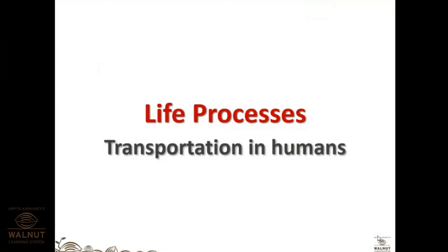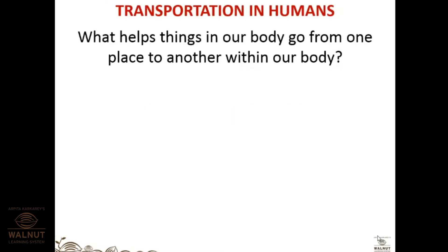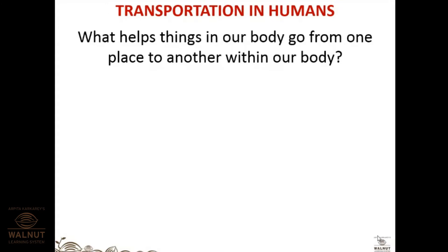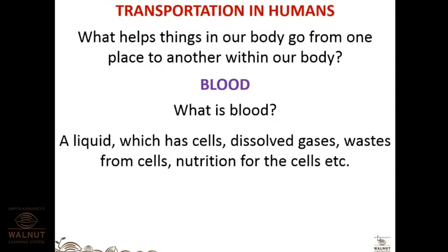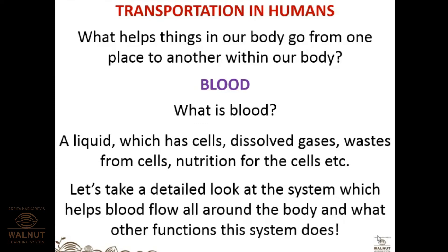Today we start with transportation in humans — how humans perform transportation and which part of the body is responsible. What helps things move from one place to another inside our body? Blood. Blood is basically a connective tissue — a liquid that carries dissolved gases, waste from cells, and nutrition for cells — both oxygenated and deoxygenated materials.